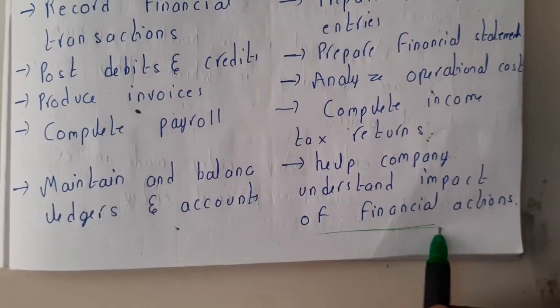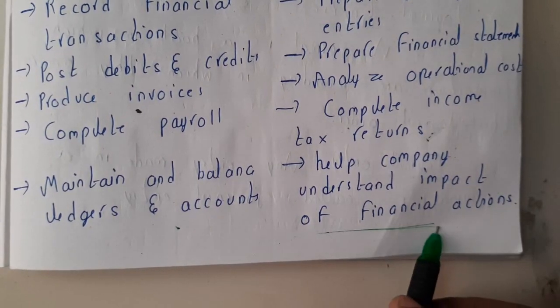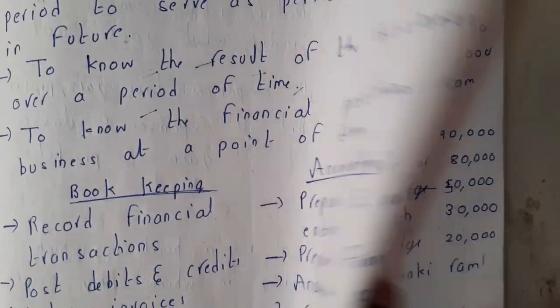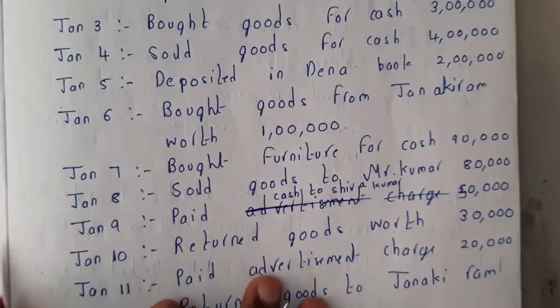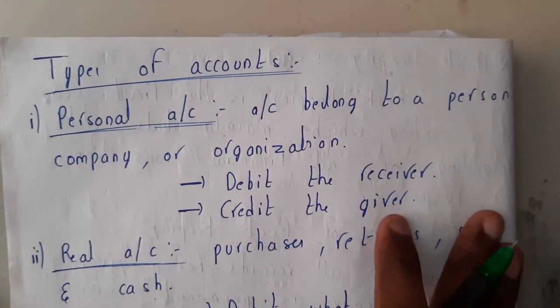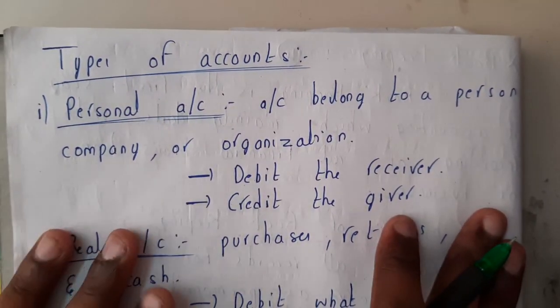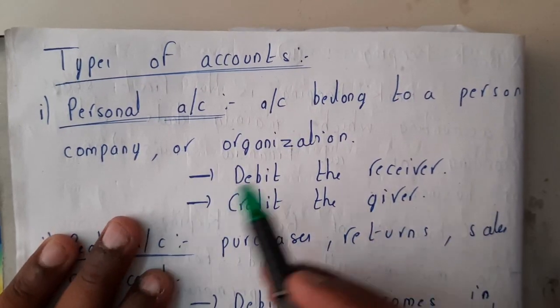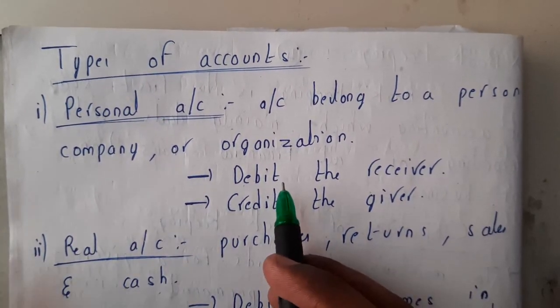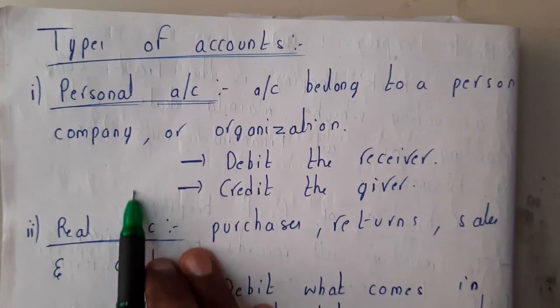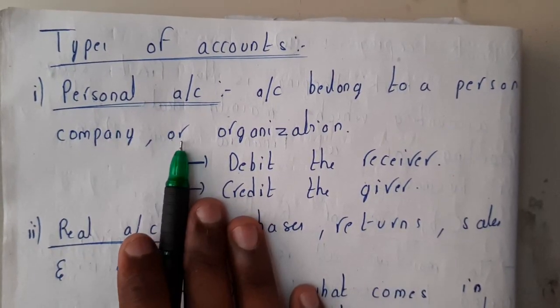Accounting helps the company understand the impact of financial actions. There are no major differences between bookkeeping and accounting. Now let us go through the types of accounts. We have three different types of accounts, and we will be using the real account in most problems.